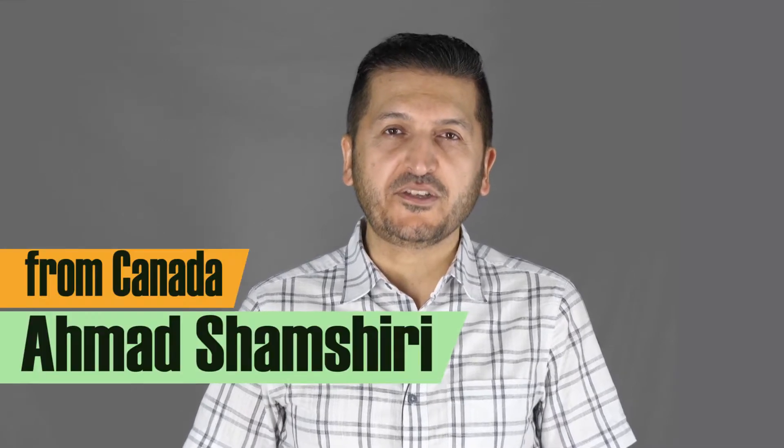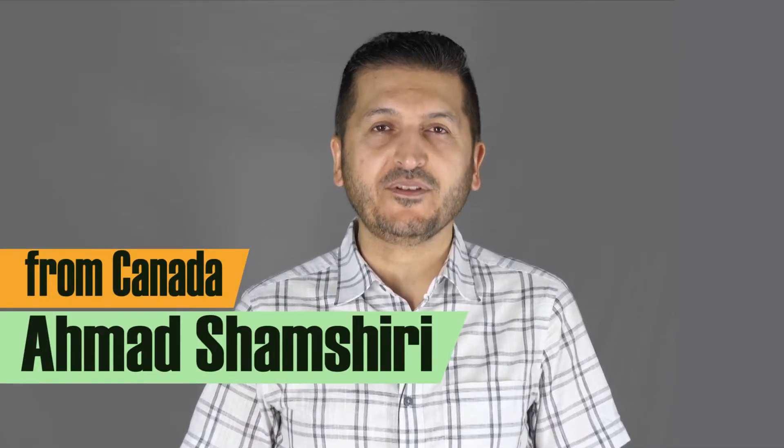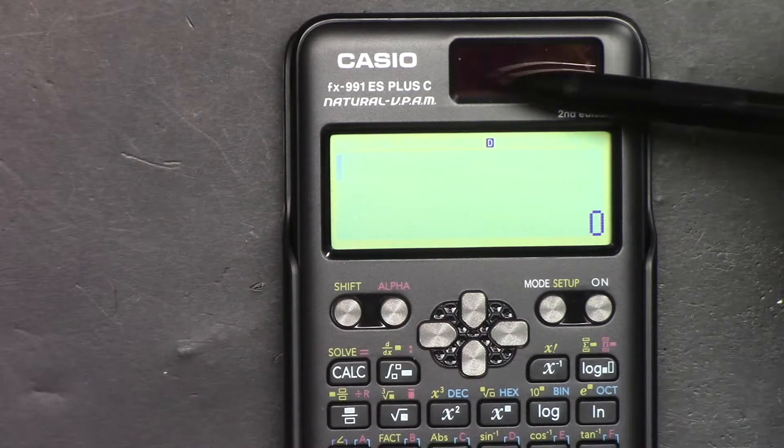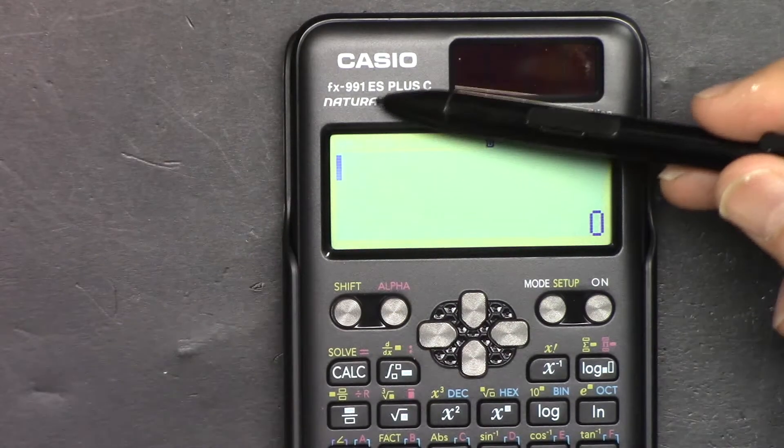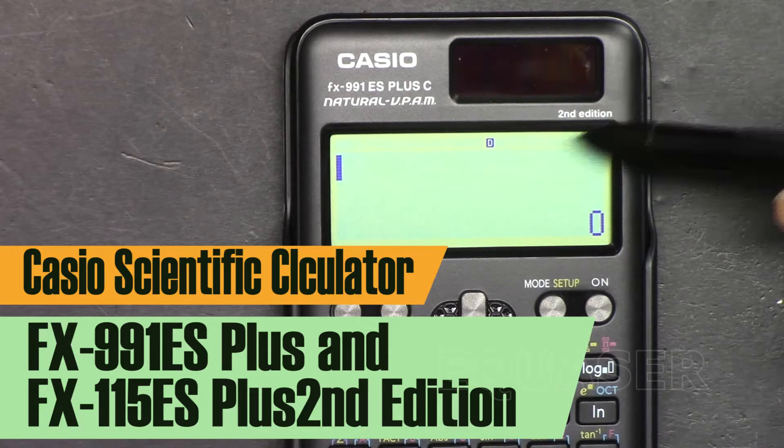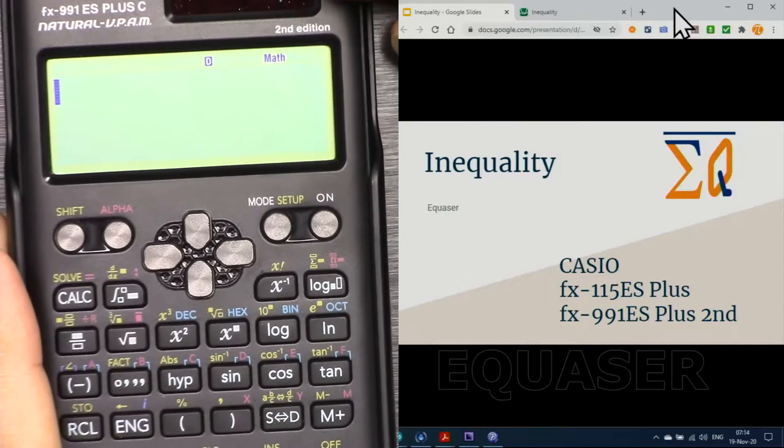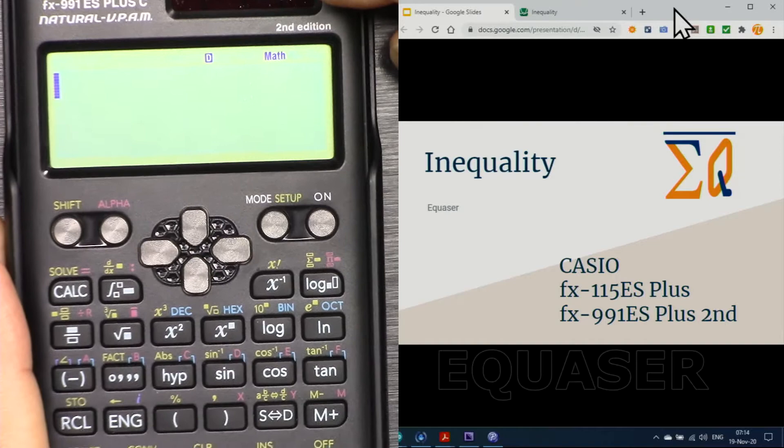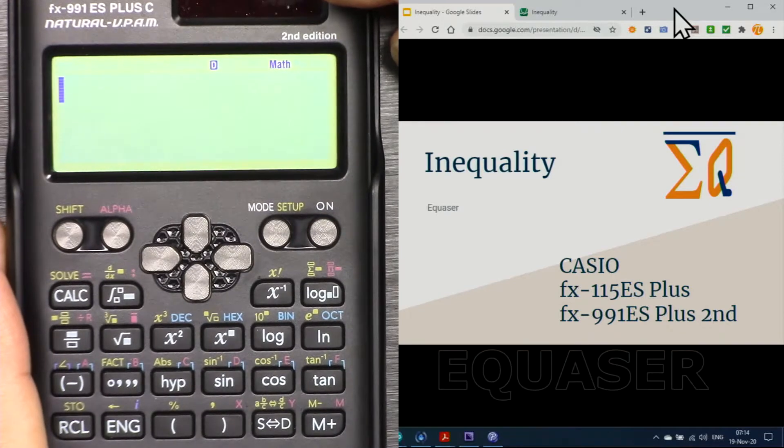Hi, welcome to a video tutorial from Equator. My name is Ahmad Shamshiri. In this video we are going to use this Casio FX-991ES Plus second edition scientific calculator to evaluate functions for inequalities. Let's get started with this.